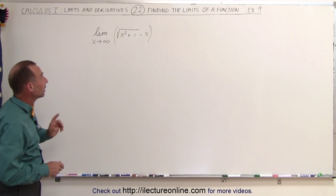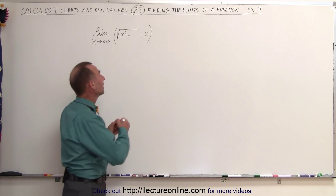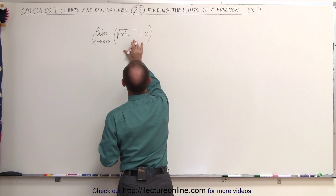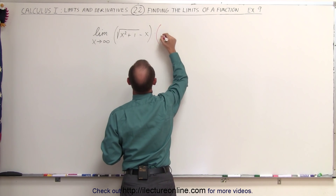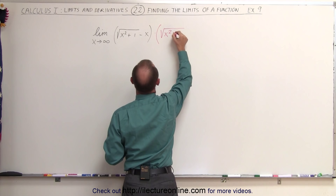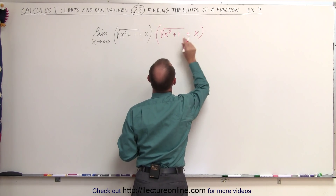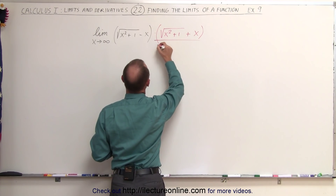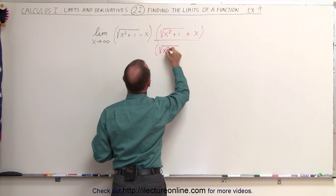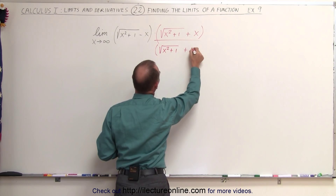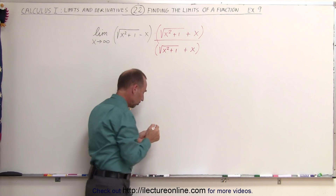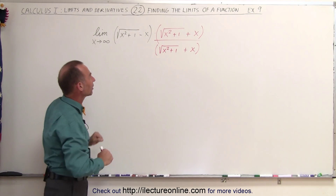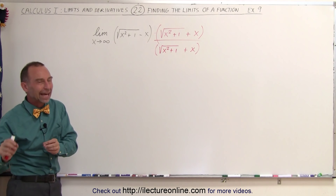So what we can do instead is multiply this by something interesting. We're going to multiply this times what we call the conjugate — the same expression but with a plus here instead of a minus. So we multiply this times the square root of x squared plus 1, plus x. And of course, if we multiply the numerator by that, we also have to multiply the denominator by the exact same thing. As long as the numerator is exactly the same as the denominator, this is essentially multiplying by 1, so we do not change the value of the expression, but we do change it into a format where we can plug in the limit.